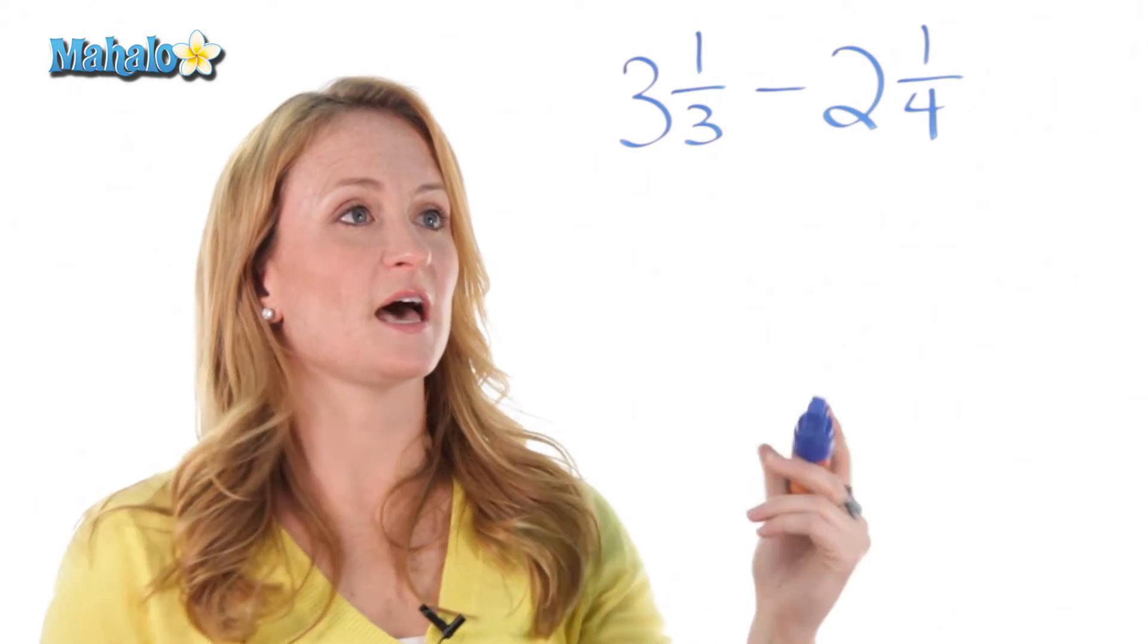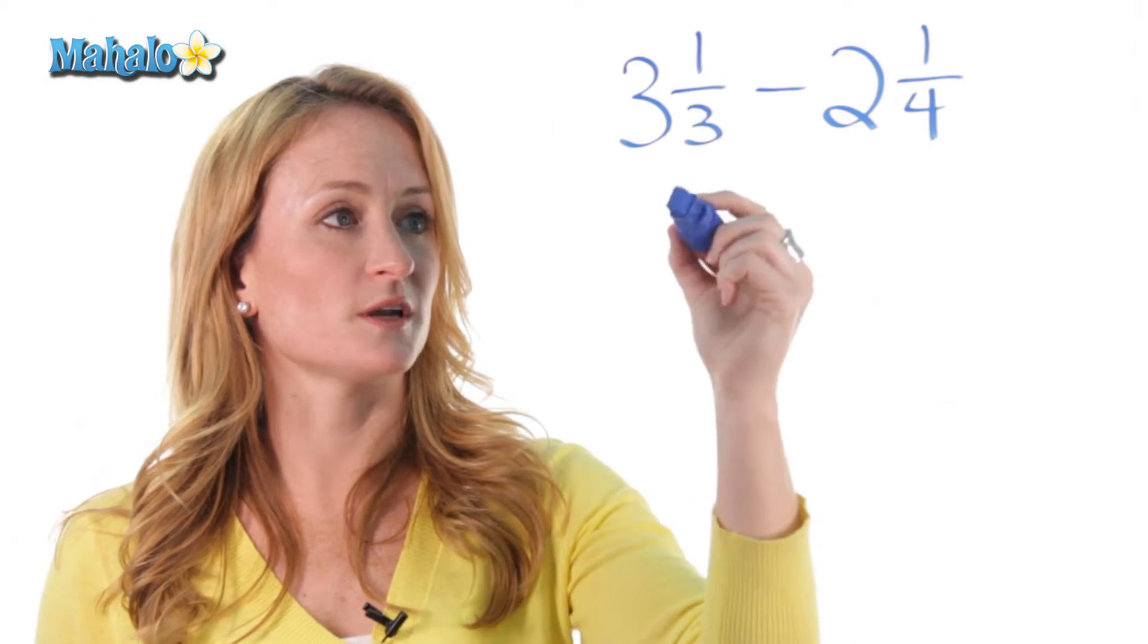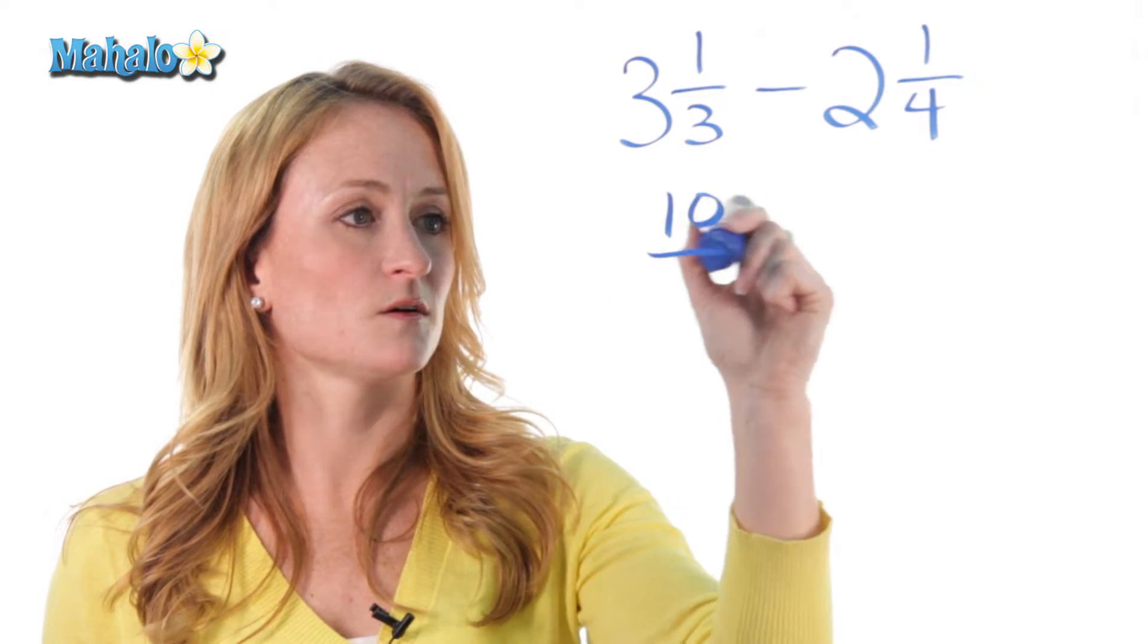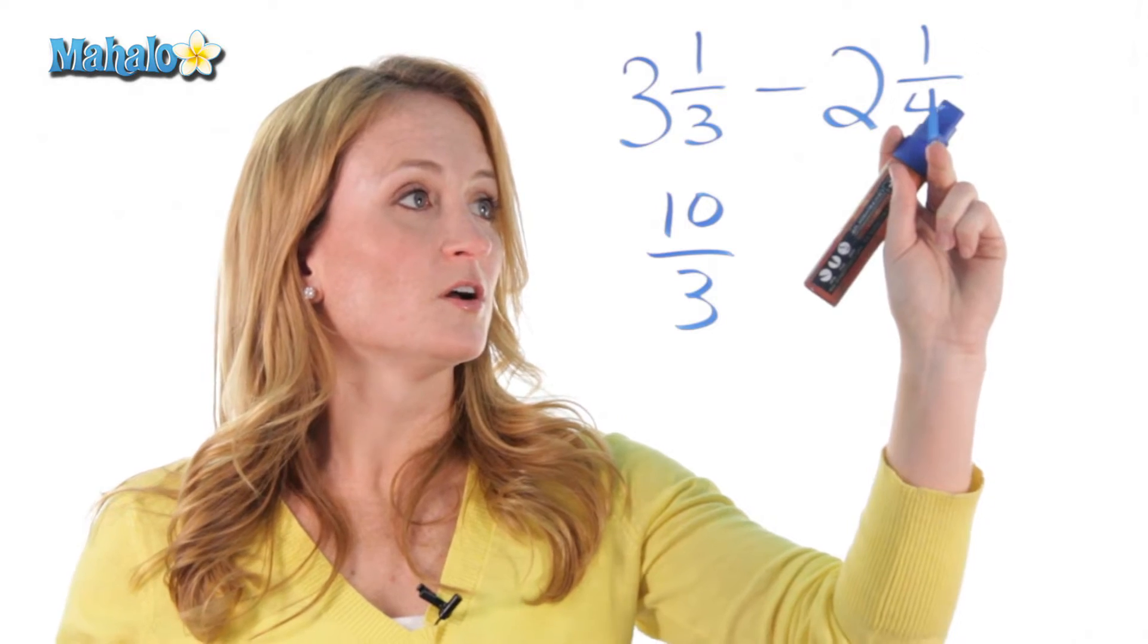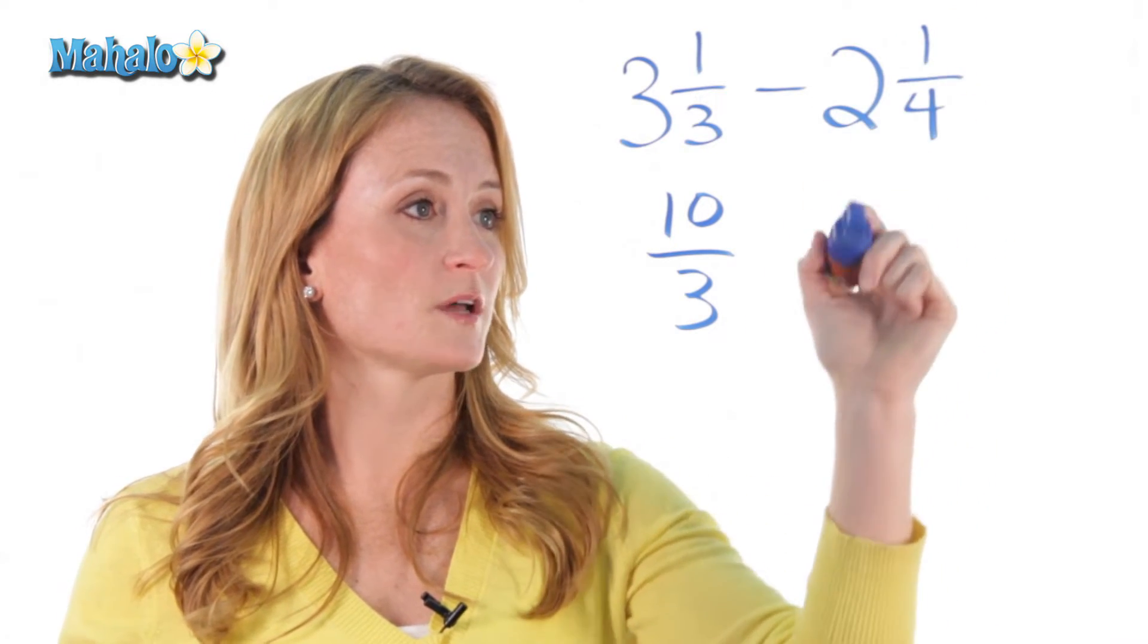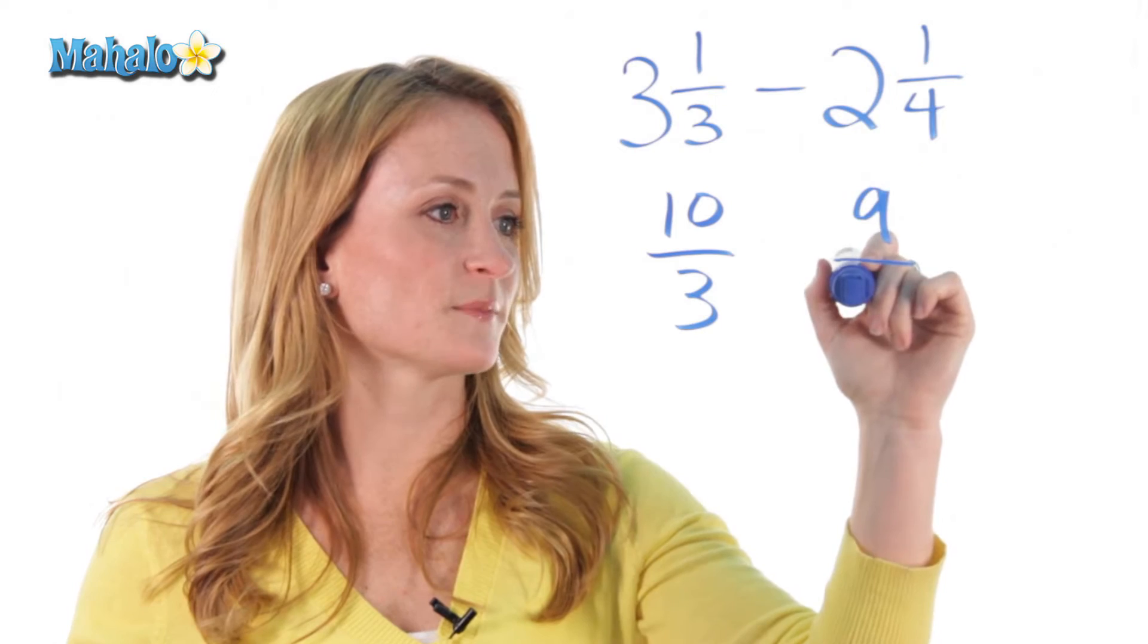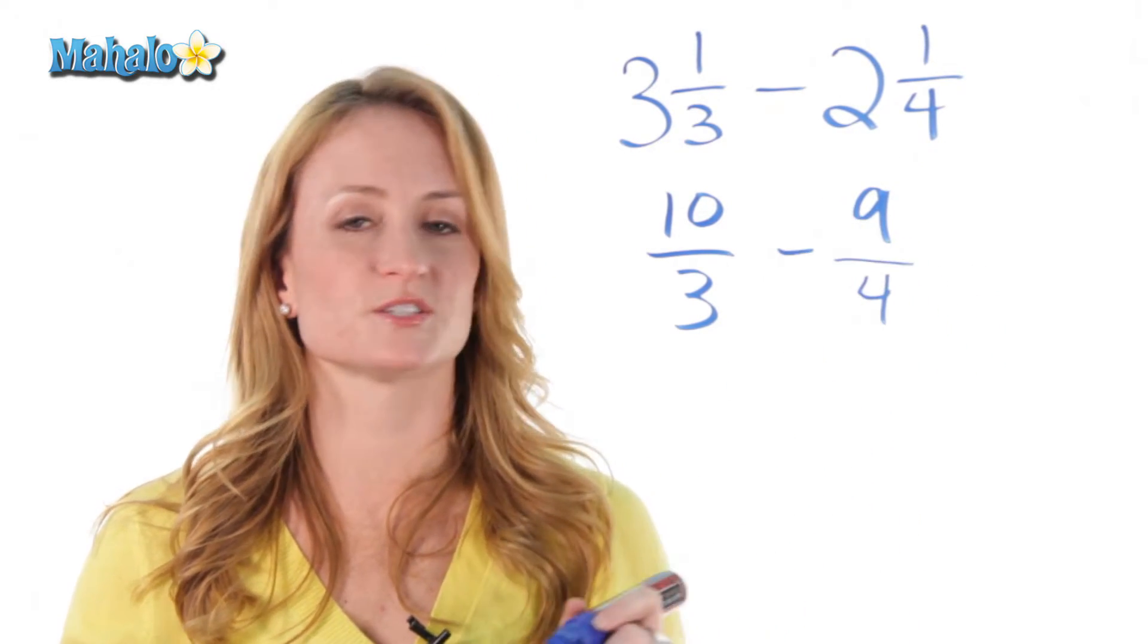And we know how to do that by saying 3 times 3 is 9, plus 1 is 10, over the same denominator. And over here, we have 4 times 2 is 8, plus 1 is 9, over the same denominator. Bring down our subtraction sign.